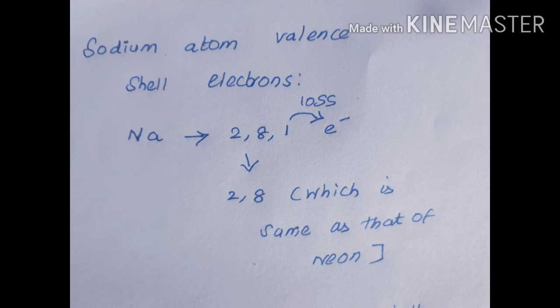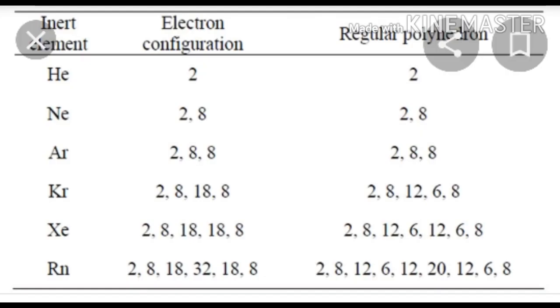See the picture — 2, 8, 1. The outermost shell consists of only one electron. So sodium tends to lose an electron in order to attain the electronic configuration of neon, that is 2, 8. By losing one electron, it becomes 2, 8 — which is the same as neon's electronic configuration.